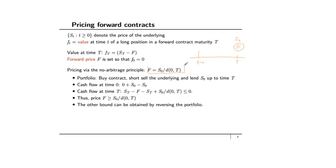The arbitrage argument gives us that F equals S_0 divided by the total discount from zero to capital T. Here's how the argument goes: we buy a portfolio — we go long the contract, short-sell the underlying, and lend S_0 up to time capital T. By short selling, I mean borrowing the underlying from a broker, selling it in the market, and then at time capital T buying it back and returning it to the broker. We use no-arbitrage conditions to figure out bounds on the price F.